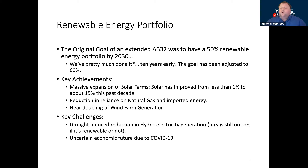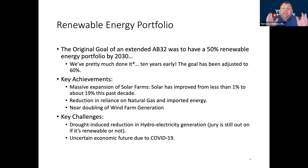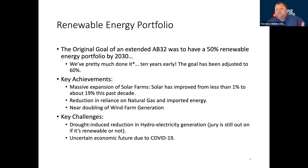That being said, there are also some key challenges. One of the biggest is that the jury has still been out somewhat on whether hydroelectricity generation is considered renewable. Here in California, that's especially true because we have seen a big increase in the occurrence of drought over the past 10 to 15 years. Because drought is becoming more common, our ability to produce electricity from hydro generation becomes less — we have less water, therefore weaker rivers, emptier reservoirs, not as much water flowing through our dams, and therefore not as much electricity generation.